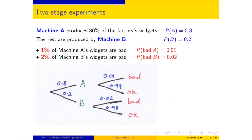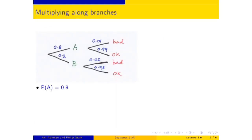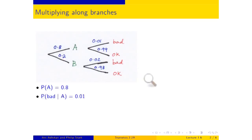This diagram encapsulates all of the text of the description. Now we're going to start computing some chances. So for a randomly picked widget, the probability that it is made by machine A is 0.8, and the probability that it is bad given that it was produced by machine A is 0.01 — that's 1%.